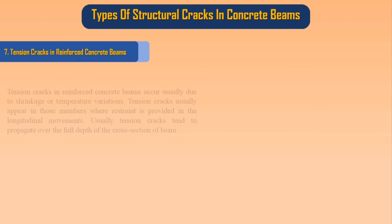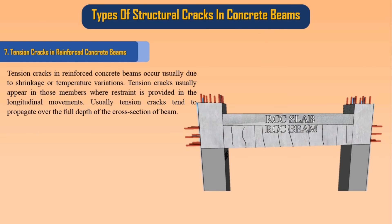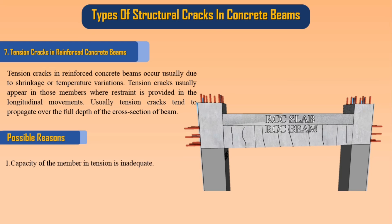Tension cracks in reinforced concrete beams occur usually due to shrinkage or temperature variations. They usually appear in members where restraint is provided against longitudinal movements, and tend to propagate over the full depth of the cross-section of the beam. Possible reasons: 1. Capacity of the member in tension is inadequate. 2. Tensile reinforcement is insufficient.